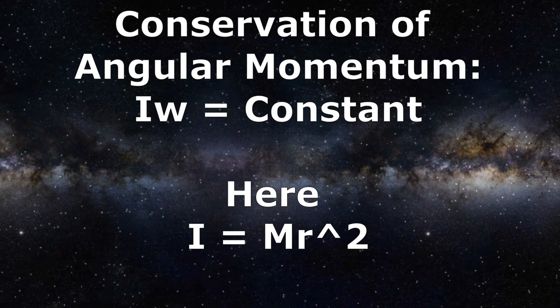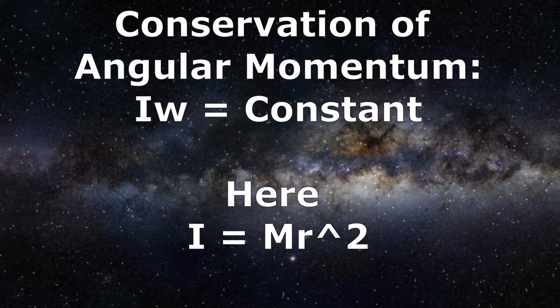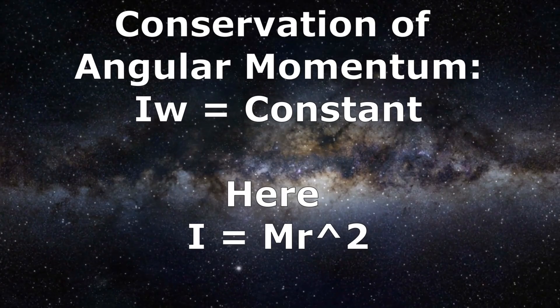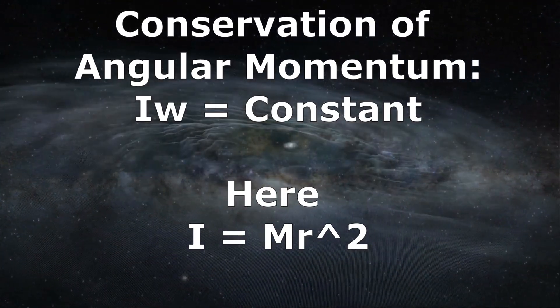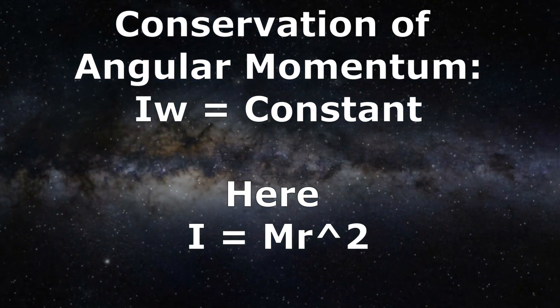Now, look at the formula of conservation of angular momentum. As the r decreases, the moment of inertia I also decreases. But to keep I omega constant, the angular velocity omega increases.